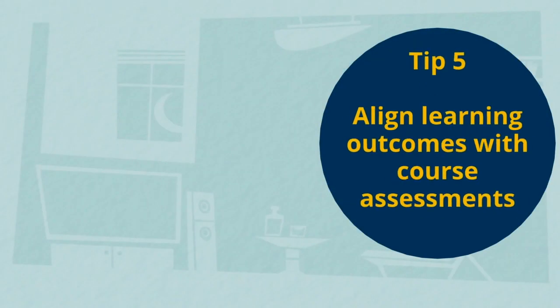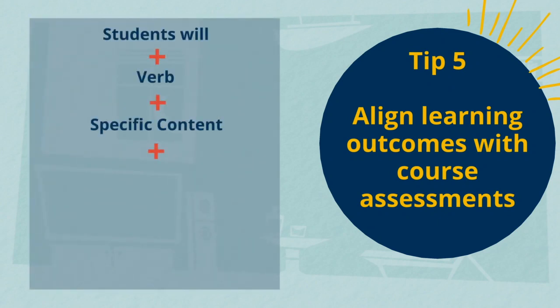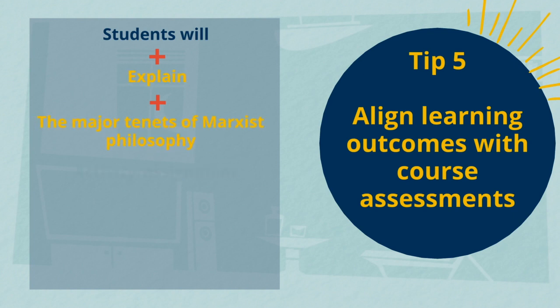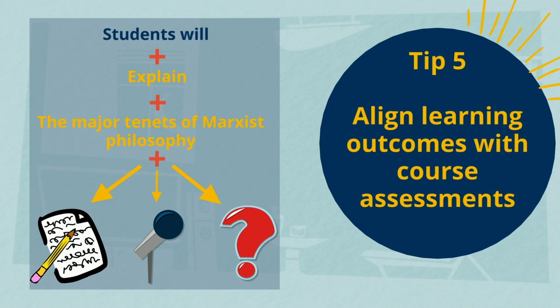Tip number five: align your learning outcomes with course assessments. Determine the ways that students can demonstrate their thinking on an assignment. For example, will your students explain the major tenets of Marxist philosophy in a paper, a presentation, or in an exam question? All three will work if you want students to explain something. You just have to decide which works best for your course and your grading sanity.